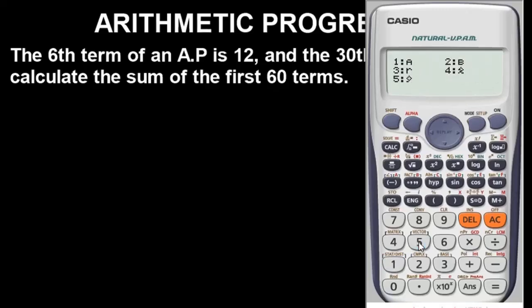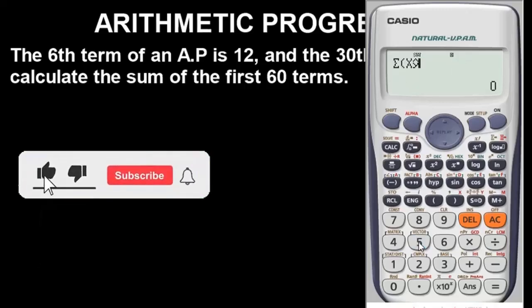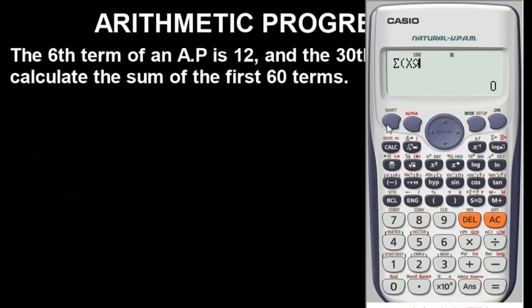This symbol we're looking for, the x-hat symbol, is what we're going to use to ensure we get the sum, the correct answer. Ensure you take note of this symbol. If you use any other symbol, you won't get the right answer. Press option 5 for this particular symbol to come out. Once you've done that, press comma to add comma. To bring out comma, press shift, then this button - the close parenthesis button. Press alpha then shift for the comma. Now we need to find the first 60 terms.